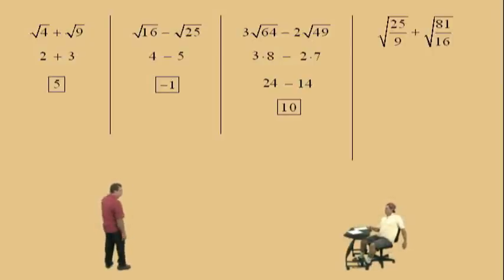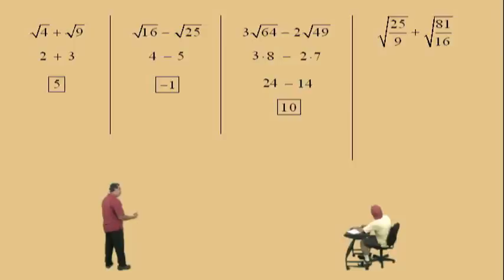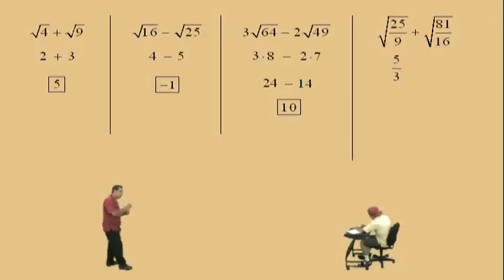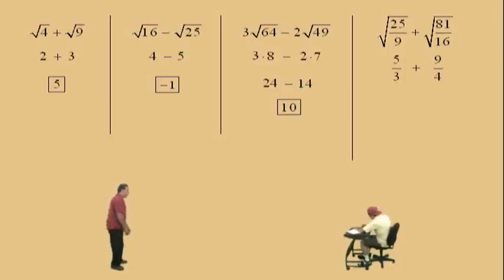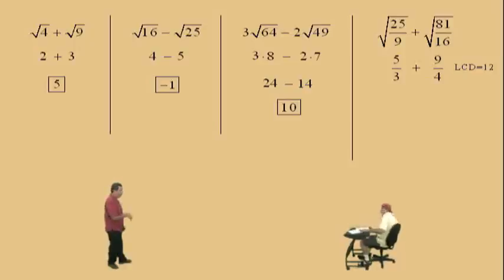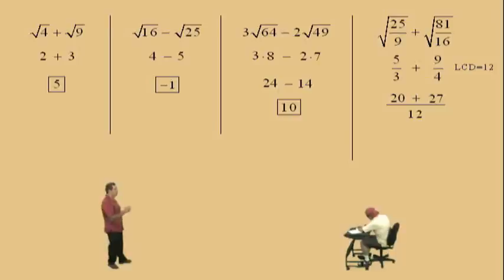Let's do one more. Don't get scared — notice we have fractions underneath the radical sign. What fraction do we square to get 25 over 9, Charlie? 5 thirds. That's right. A lot of people like to think: the square root of 25 is 5 and the square root of 9 is 3, so that is 5 thirds — because 5 thirds squared means 5 thirds times 5 thirds, which is 25 over 9. What's the square root of 81 over 16, Charlie? 9 over 4. Very nice, 9 over 4. And here we have to find the LCD, which is 12. 3 goes into 12 four times; 4 times 5 is 20. 4 goes into 12 three times; 3 times 9 is 27. It's over 12 because these are 12s. And 20 plus 27 is 47, so the answer is 47 twelfths.